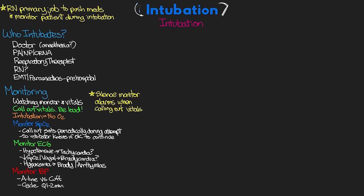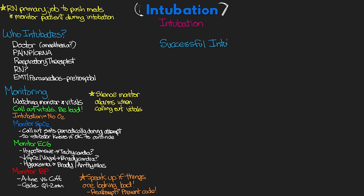In these stressful situations, every attempt is being made to get the ET tube in place, but don't be afraid to speak up if things are looking bad. If sats are dropping into the 70s, 60s or lower and the patient is becoming bradycardic or having increasing ectopy and arrhythmias, make sure you speak up. They're probably going to need to abort that attempt and re-attempt, with the goal of avoiding having to code the patient.